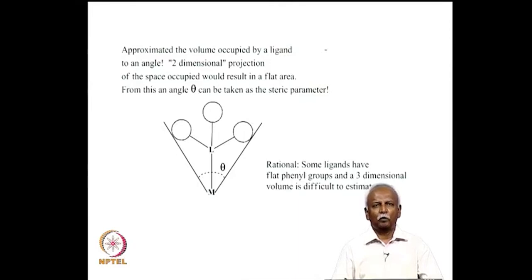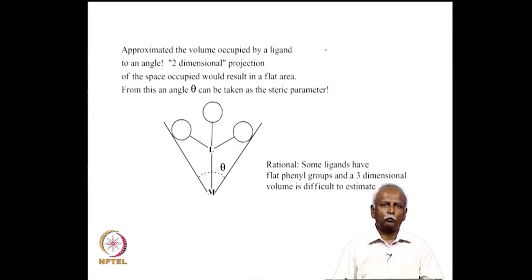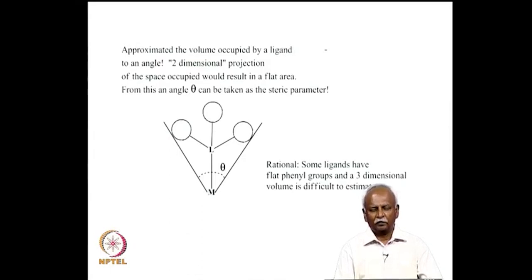Tolman initially approximated the steric influence as a 2D cone angle. He projected the ligand onto a flat surface and measured the angle theta subtended at the metal atom. By taking the outermost points of the ligand and drawing lines to the metal, one can measure this angle using a simple protractor — and indeed, Tolman did this by making molecular models and measuring with a protractor.